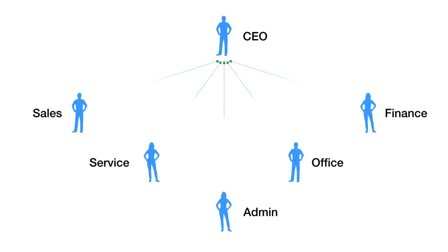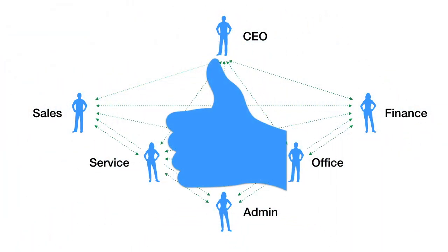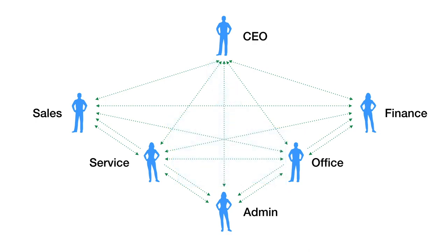And as you can imagine, making Patrick's dealership run smoothly depends on the efficient flow of information from one department to another. Data from people, processes, and technology all have to flow seamlessly for the dealership to achieve its goals. To make this happen, Patrick monitors a number of reports from each of his departments.